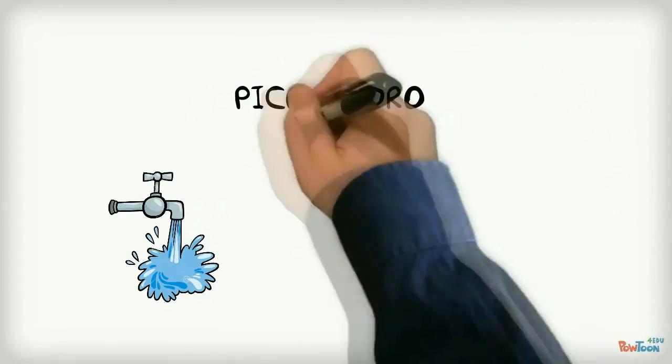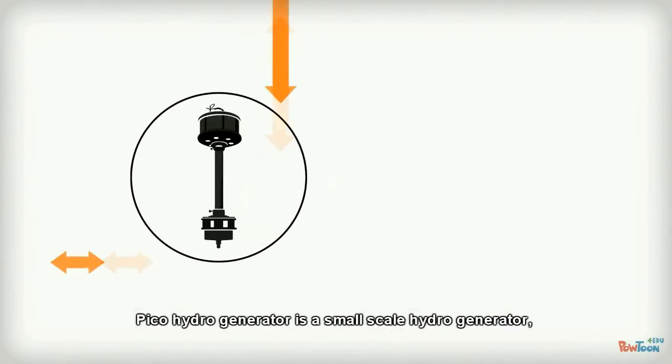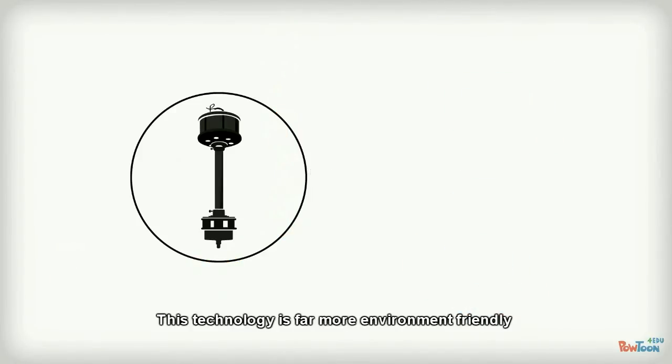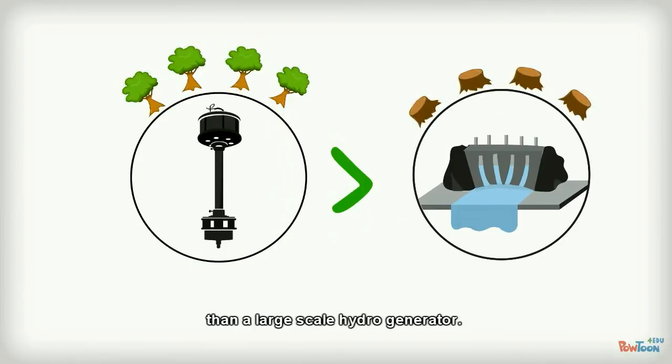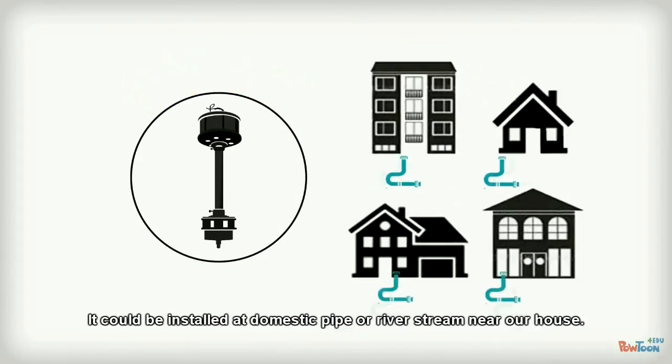Beco hydro generator is a small-scale hydro generator typically using water current and turbine to produce energy. This technology is far more environmentally friendly than a large-scale hydro generator. It could be installed at domestic pipes or river streams near our house.